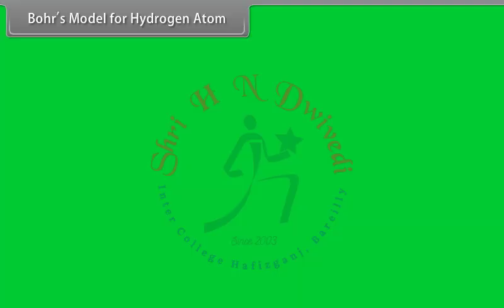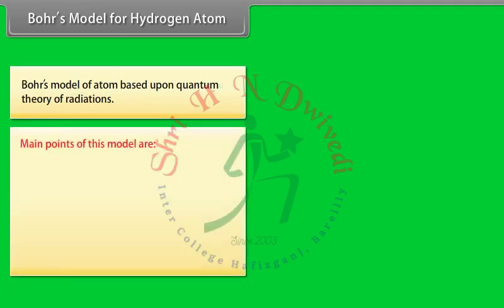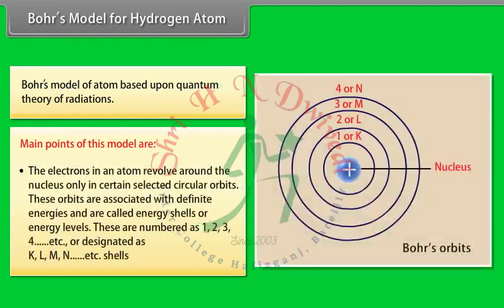Bohr's model for hydrogen atom: Bohr's model of the atom is based upon the quantum theory of radiation. The main points are: the electrons in an atom revolve around the nucleus only in certain selected circular orbits. These orbits are associated with definite energies and are called energy shells or energy levels.